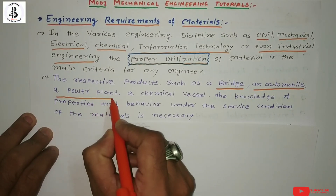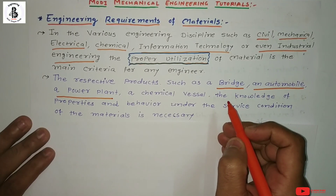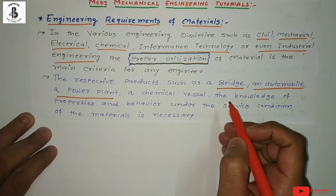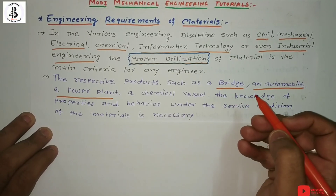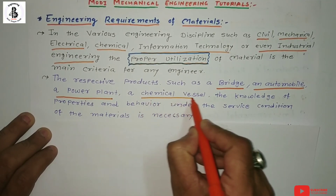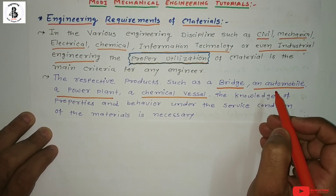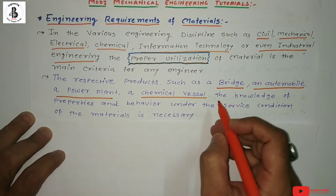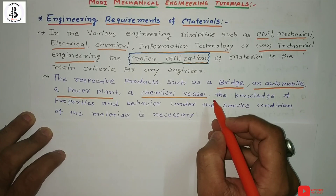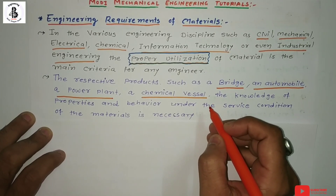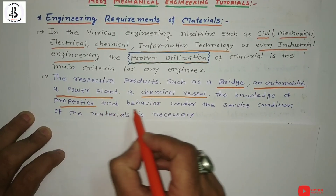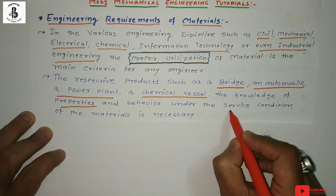For Power Plants, which are used to generate electricity, there are high temperature applications, so all components are selected based on high temperature requirements. For Chemical Vessels used in Chemical Industries for storage and transportation of chemicals, we select materials that will not be chemically affected by the environment or by any other material.